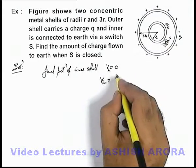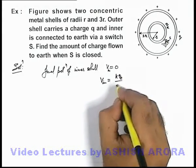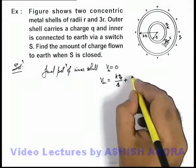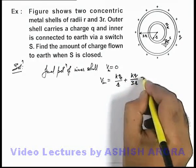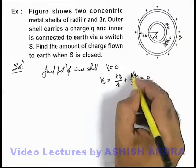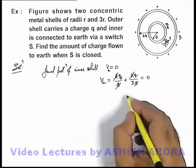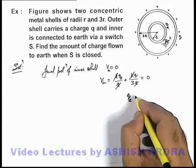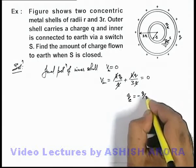Due to the inner charge it will be k qe by r, plus due to the outer one it will be k q by 3r, which should equal zero. In this situation, k and r cancel out, and the value of charge supplied by earth can be written as minus q by 3.